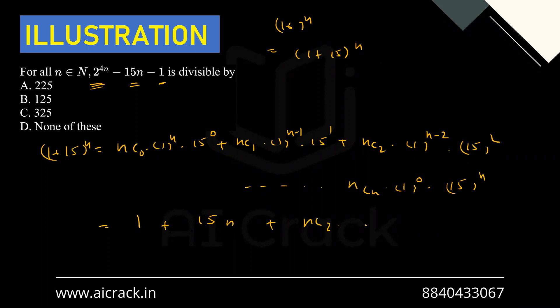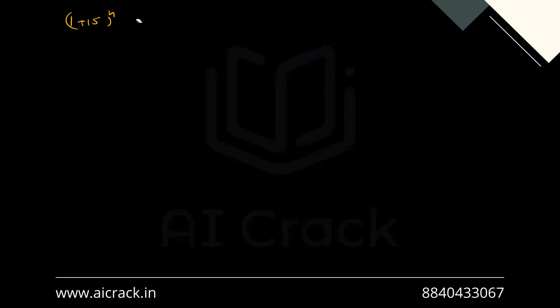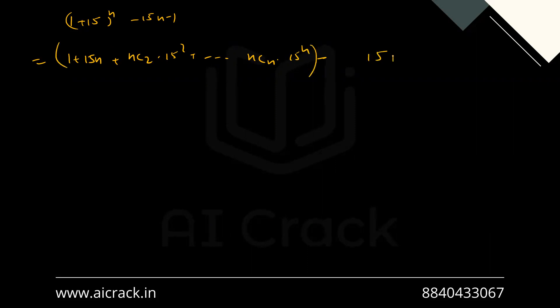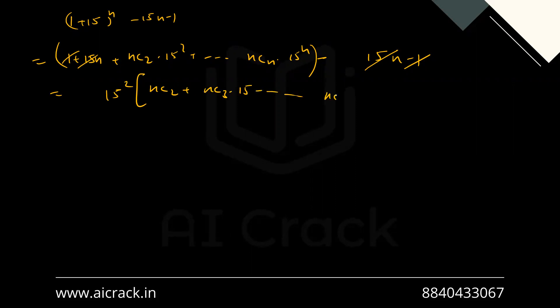The third term is nC2 (an integer) multiplied by 15², and so on up to nCn·15^n. Our original expression is 2^(4n) - 15n - 1, which is (1+15)^n - 15n - 1. The first term (1) and the 15n term cancel out, leaving us with nC2·15² + nC3·15³ + ... + nCn·15^n. So 15² is clearly a common factor.